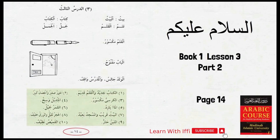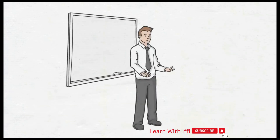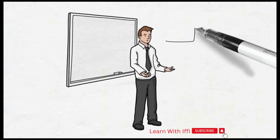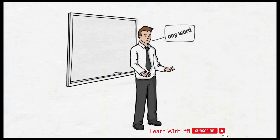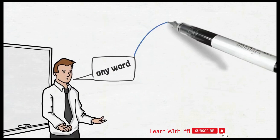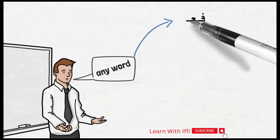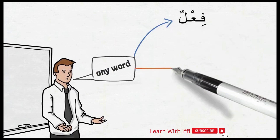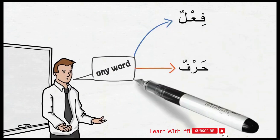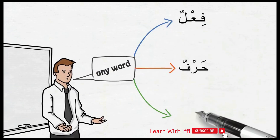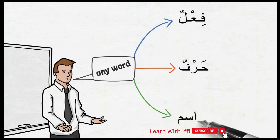But before we do that, let me introduce you to something that will be very useful for us down the road. When we speak in Arabic, any word that comes out of our mouth will fall into one of the following three categories: fi'al, harf, or ism.